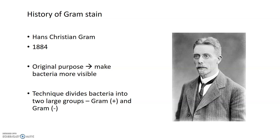Gram staining has been around since 1884 when a Danish microbiologist called Hans Christian Gram developed it. His original purpose was just to make the bacteria he was interested in more visible under the microscope as a simple staining technique. But what he devised was actually a differential technique, because it can divide bacteria into two different groups by staining them differently. Gram staining divides bacteria into gram positive and gram negative bacteria, because these two groups stain differently from each other after the gram staining procedure.